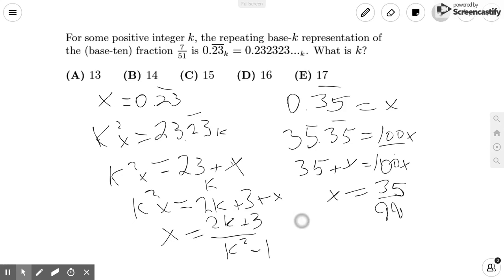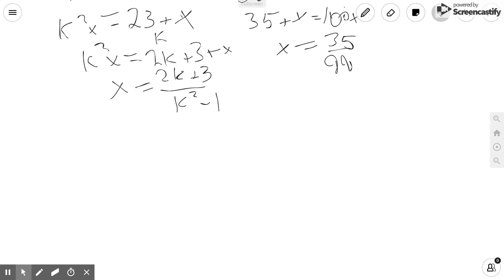And now we need to figure out when this fraction 2k plus 3 over k squared minus 1 is going to be equal to 7 over 51.